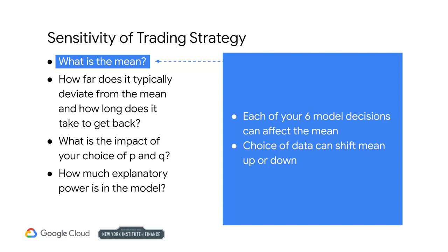You make six key decisions, and each of these decisions can affect that average. Suppose you work with equity prices and choose your data exclusively from bull markets. If your choice of data excluded periods of bearish markets, then perhaps your mean is too high.